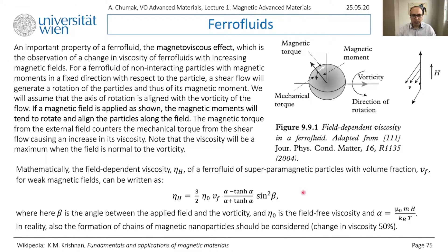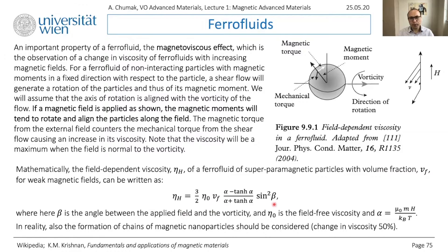There is a formula found in Krishnan, derived from basic principles. The field-dependent viscosity is defined with some coefficient: viscosity without applied magnetic field, then it depends on the volume fraction of magnetic nanoparticles in the total fluid volume, and on alpha - a parameter introduced in Langevin theory which depends on the magnetic moment of the material, the applied field, and the temperature.